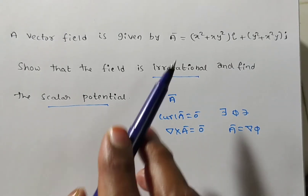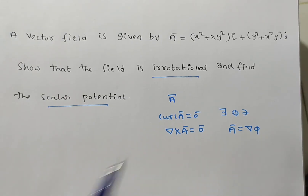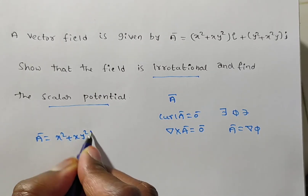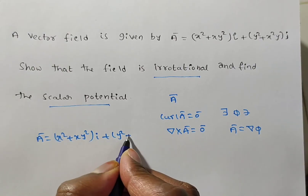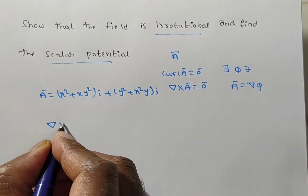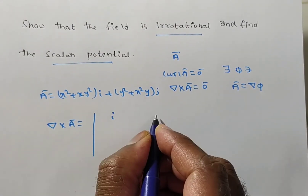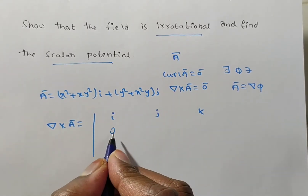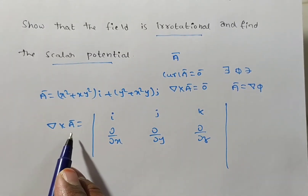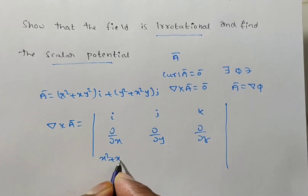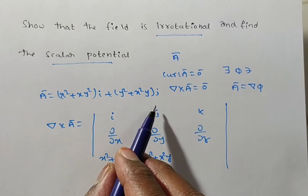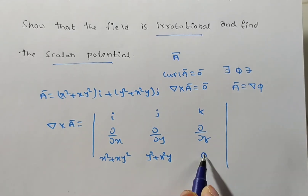First, we have to prove irrotational. For that, we need to prove del cross A bar equals 0. The given A bar equals (x² + xy²)i + (y² + x²y)j. Now, del cross A bar is the determinant with rows i, j, k; then ∂/∂x, ∂/∂y, ∂/∂z; then i-coefficient (x² + xy²), j-coefficient (y² + x²y), and k-coefficient 0.